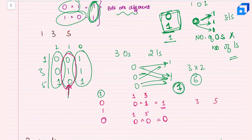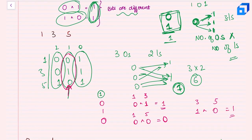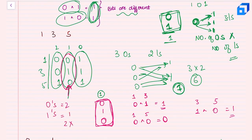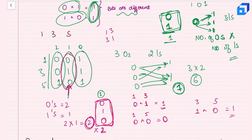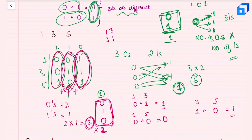Checking bit position 1 for pairs (1,3), (1,5), and (3,5): 1 and 3 differ (0 vs 1, XOR=1); 1 and 5 don't differ (0 vs 0, XOR=0); 3 and 5 differ (1 vs 0, XOR=1). So at this bit position I have two zeros and one one: 2 × 1 = 2. I also multiply by 2 to account for both (i,j) and (j,i). I then sum this across all bit positions.